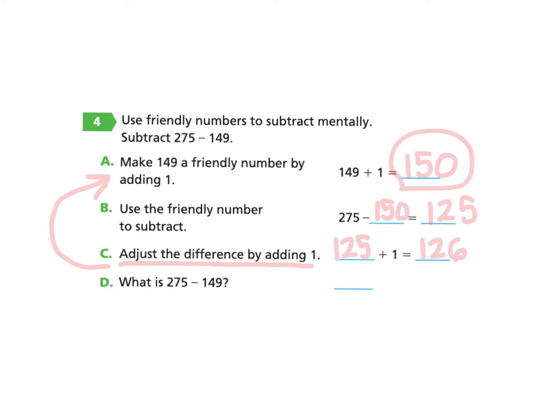So what is 275 minus 149? The answer is 126. As usual, you are always welcome to go back and re-watch this video and pause along the way anytime as needed.